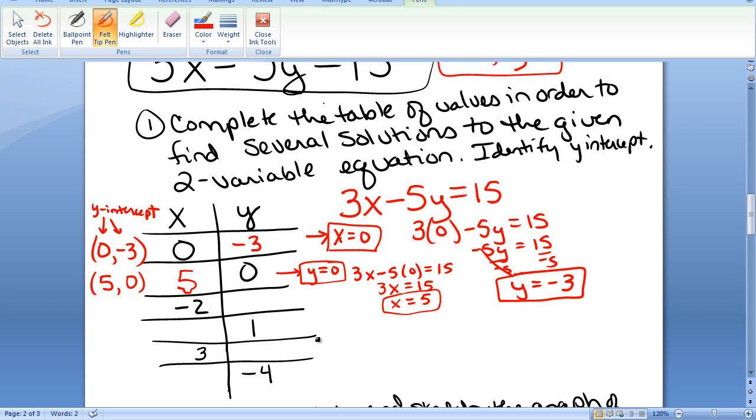Similarly, we can go through and solve when given X is negative 2, find Y. When given Y equals 1, solve for X. When given X equals 3, solve for Y. When given Y equals negative 4, solve for X. I'll go ahead and quickly do those and get the answers.